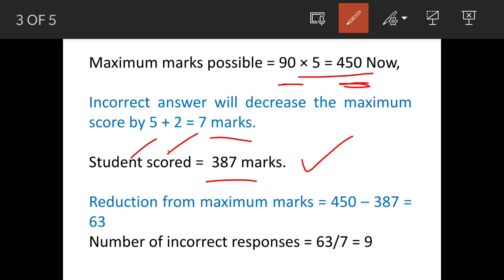The student obtained 387 marks while attempting 90 questions. Maximum marks minus 387 equals 63. These are his marks lost. Now, for every wrong question he is losing 7 marks. So 63 divided by 7 equals 9. That means he attempted 9 questions wrong.